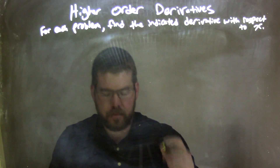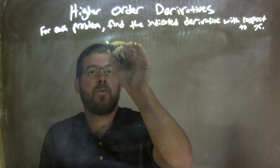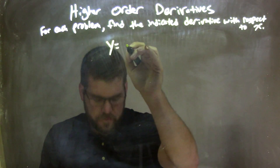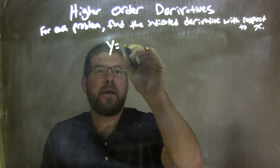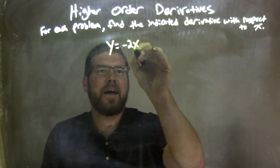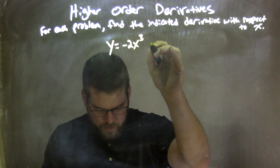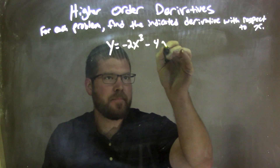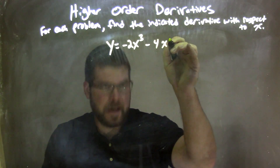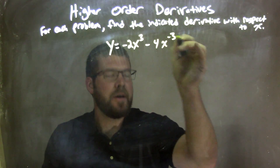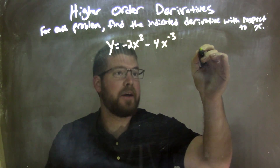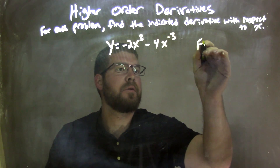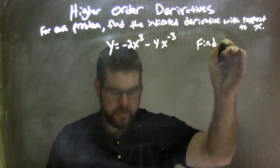So if I was given this problem: y equals negative 2x to the third power minus 4x to the negative 3 power, and we're going to find the third derivative.